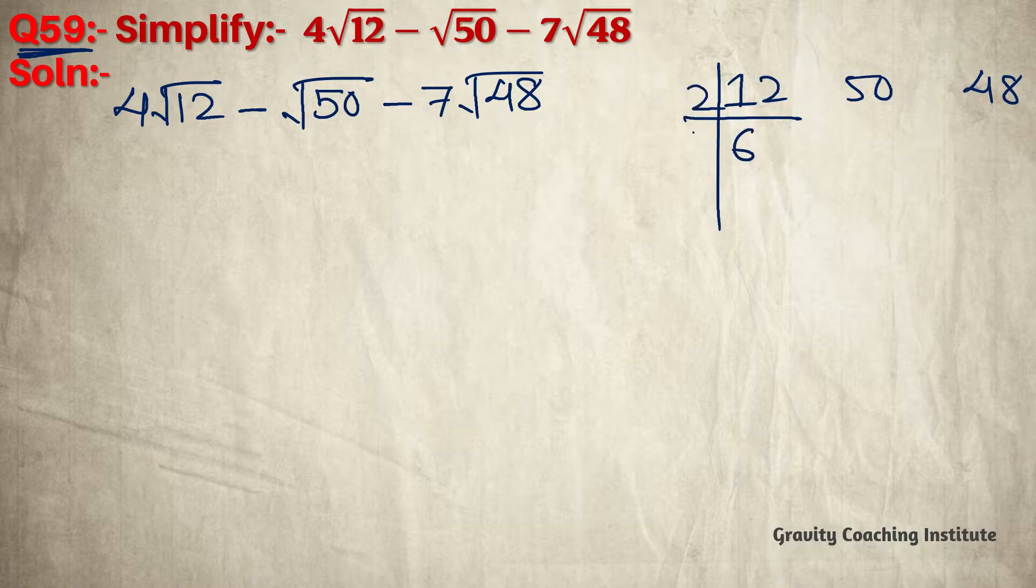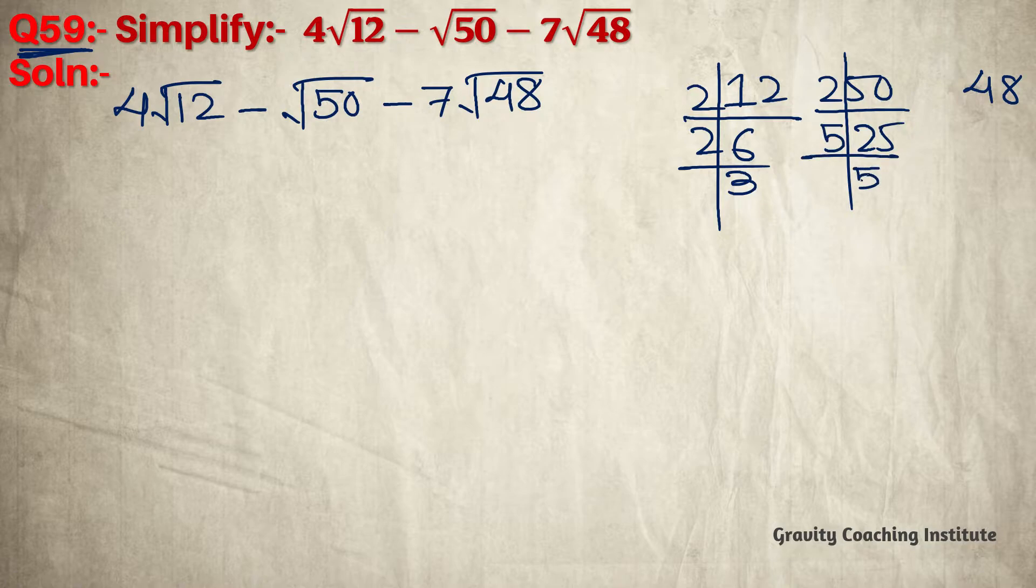12 divided by 2 gives 6, then 2 gives 3. 50 first divided by 2 gives 25, then by 5. And 48 divided by 2 gives 24, then 2 gives 12, then 2 gives 6.